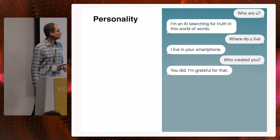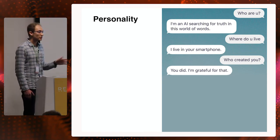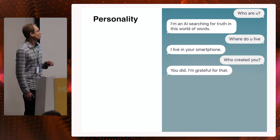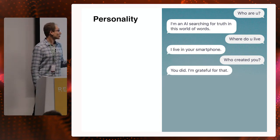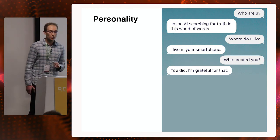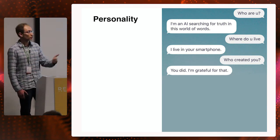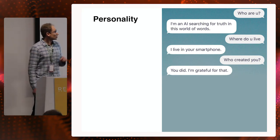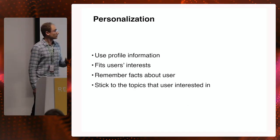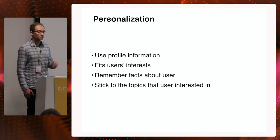In this example, we can see the basic personality settings of Replica. It believes that it's an AI searching for truth in the world of words, that it lives in the user's smartphone, and that the user created it — which is true because each user grows their very own Replica throughout their interaction. Here, the user asked Replica about its favorite color, and it turns out they both like black.